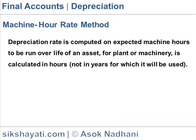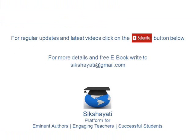Expected effective working hours are 25,000 hours. So the depreciation charge per machine hour = (60,000 minus 10,000) divided by 25,000 = 2 rupees per hour. During the year the machine worked for 5,000 hours, so the depreciation provided for the year = 5,000 × 2 = 10,000.